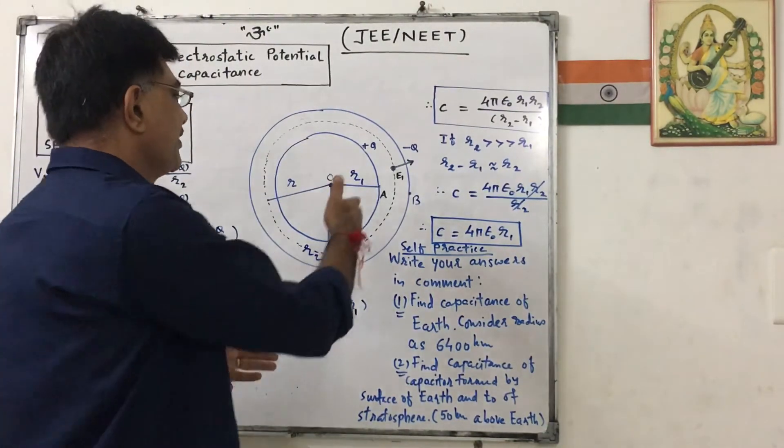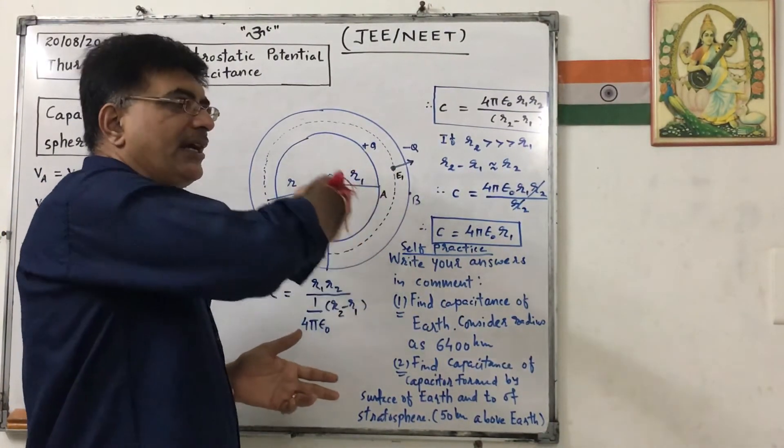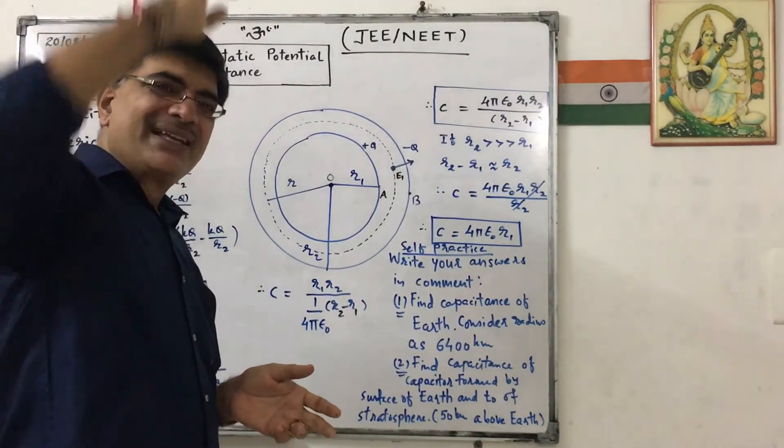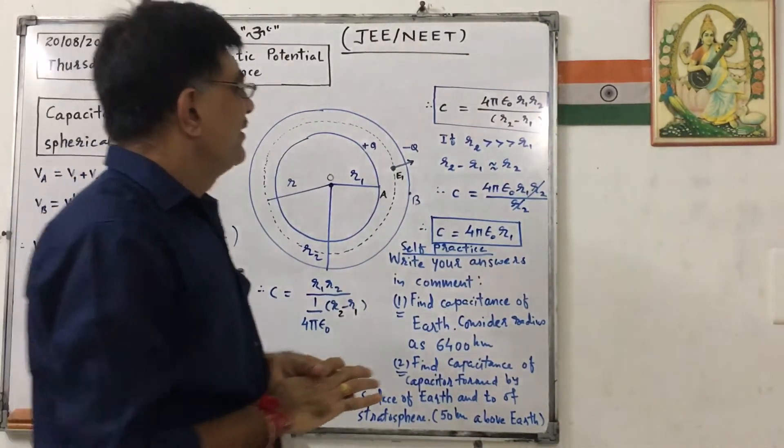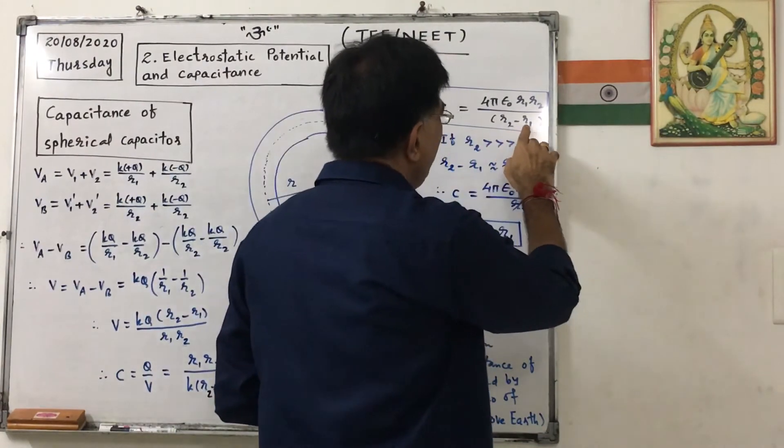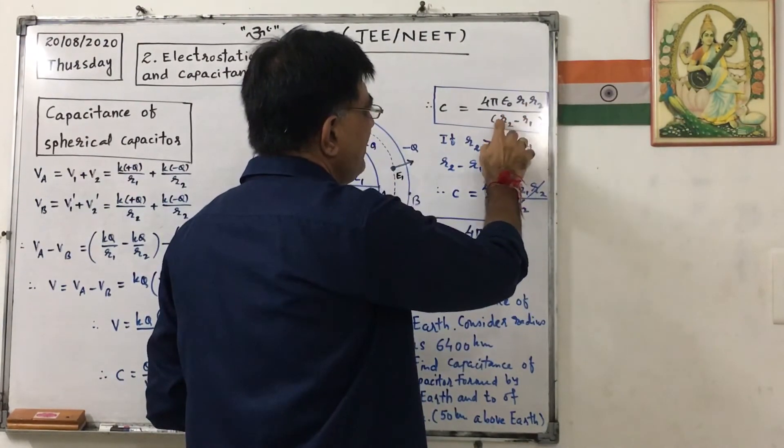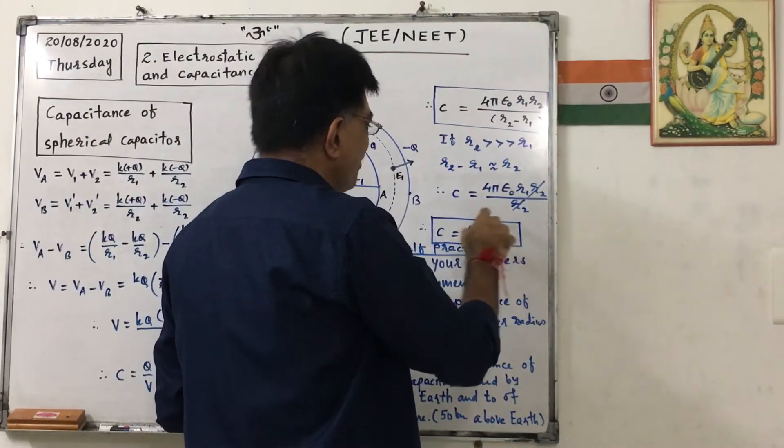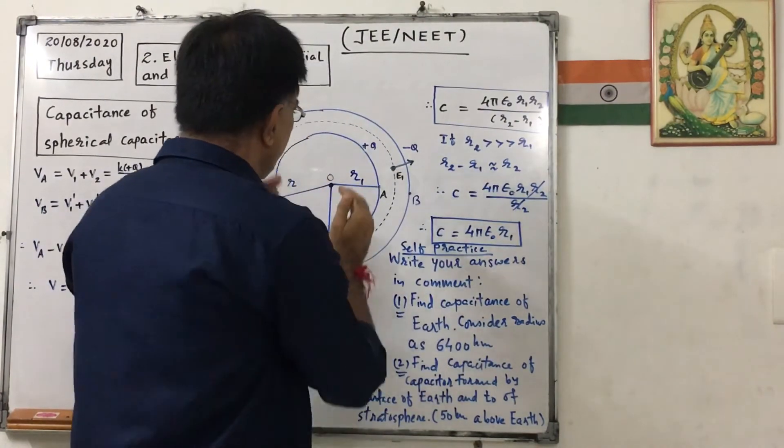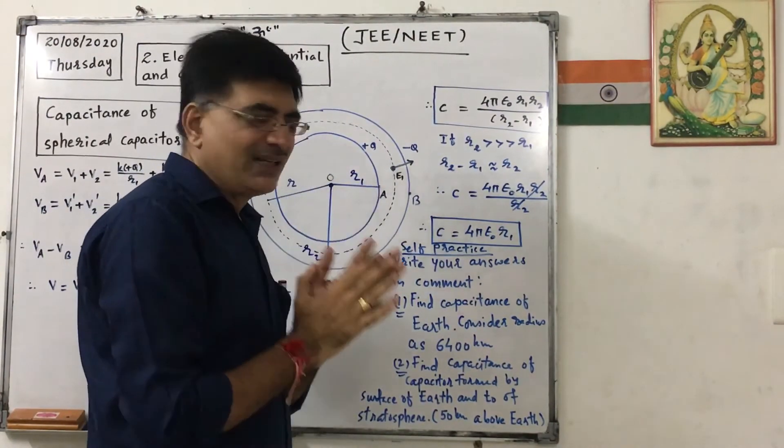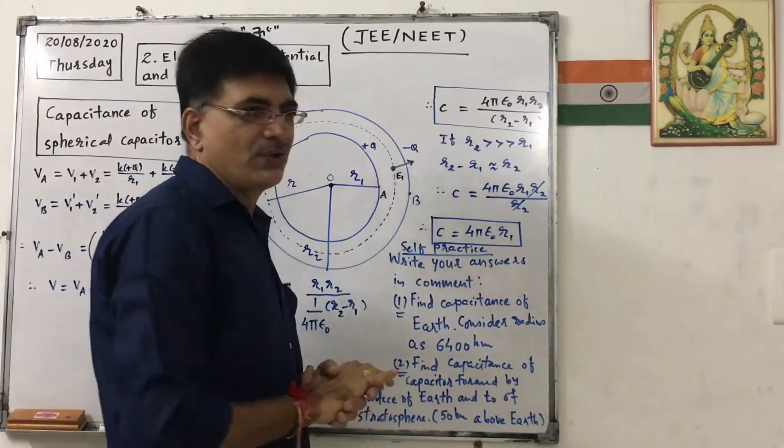Now, if we consider this outer shell at very large distance, in that case we can neglect this R1, and in that case, finally, this R2 will be cancelled. So the capacitance of this smaller shell will be equal to 4 pi epsilon naught R1.